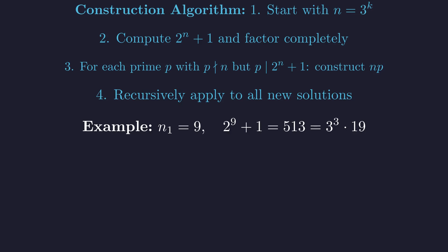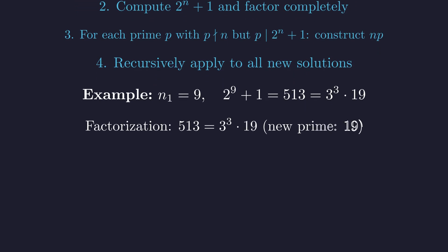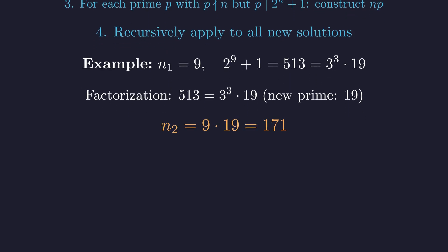Let's see this algorithm in action. Starting with n equals 9, we compute 2 to the 9th plus 1 equals 513. Factoring, 513 equals 3 cubed times 19. The prime 19 is new. It doesn't divide 9, so we can construct the next solution. 9 times 19 gives 171. And just like that, we have derived Parkes' counterexample from first principles. It's not an accident. It's the natural result of the construction process.